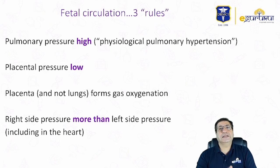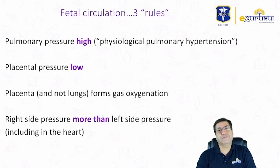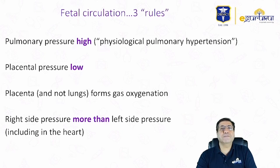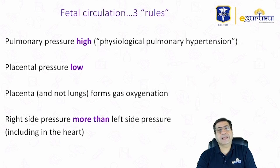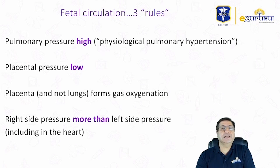For example, if the child's pulmonary pressures do not fall as they should after birth, the child can suffer from a condition referred to as persistent pulmonary hypertension of the newborn. This will result in right-to-left shunting through an open ductus arteriosus, which can lead to differential cyanosis and labile hypoxemia.